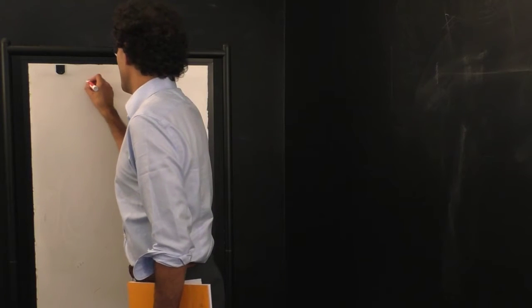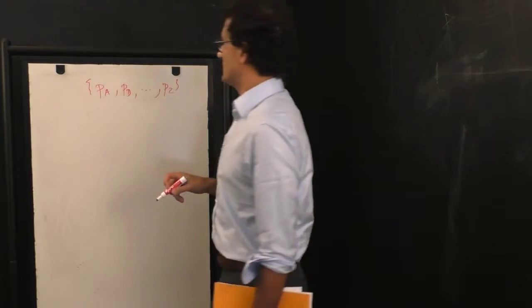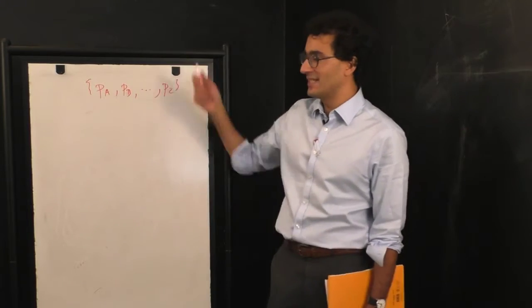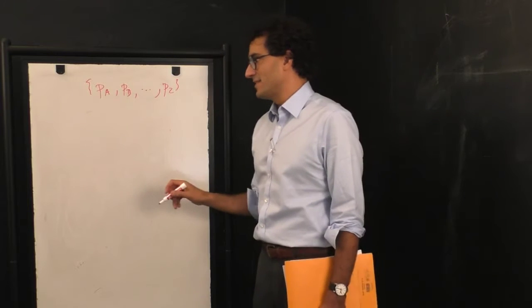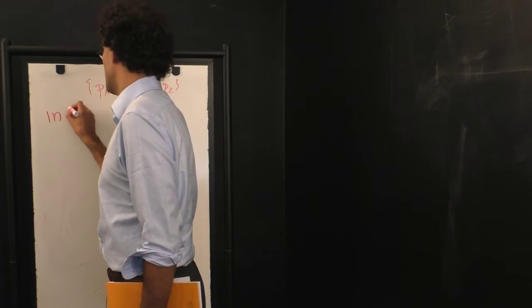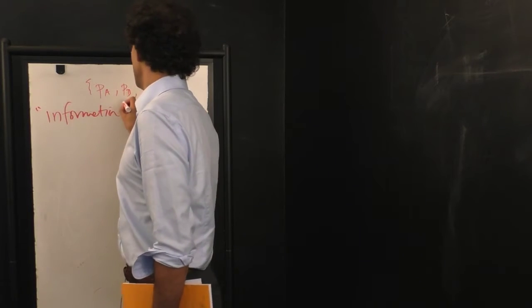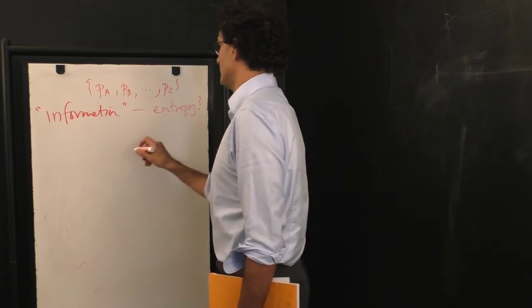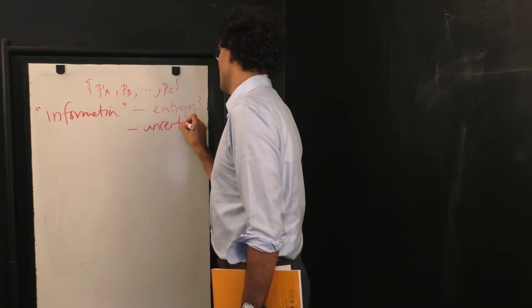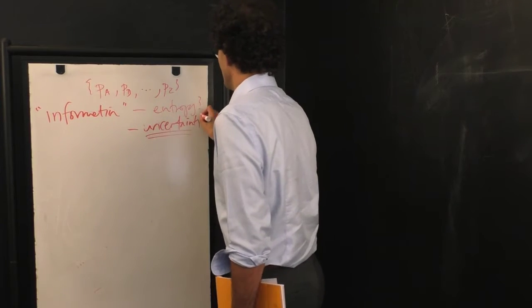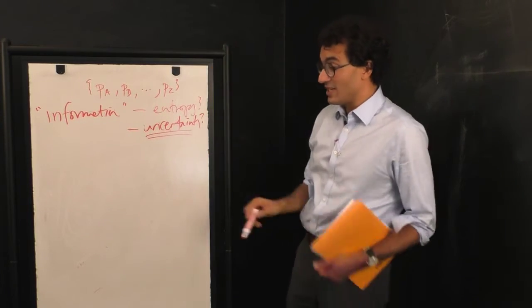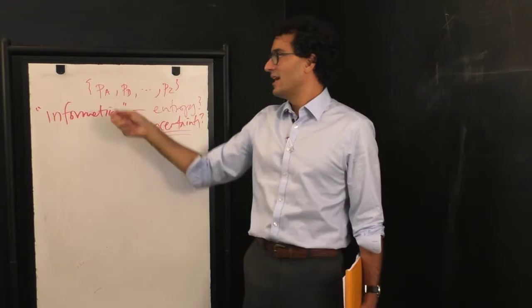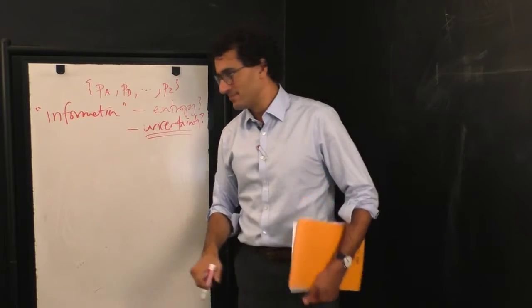Okay, so let's imagine that we have some process with 26 options. There's the probability that the process emits A, the probability that the process emits B, all the way down to the probability that the process emits Z. And what information theory does, one of the canonical questions it asks, is how much information is in that process. This term also comes up, how much entropy is in the process. Another term is how much uncertainty is in the process. A process that has higher uncertainty, in this case here, a process when you stick your hand in the bag, you don't know if you're going to get an A or B or a C all the way down to Z. A process that is more uncertain has higher entropy and has higher information.